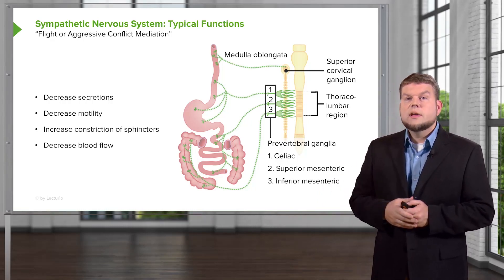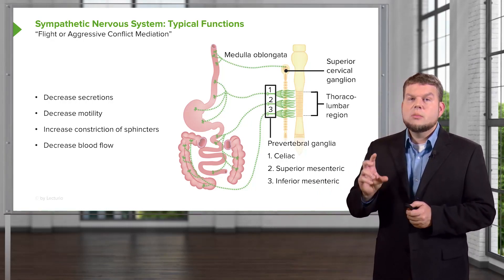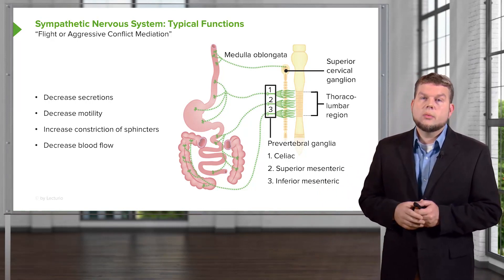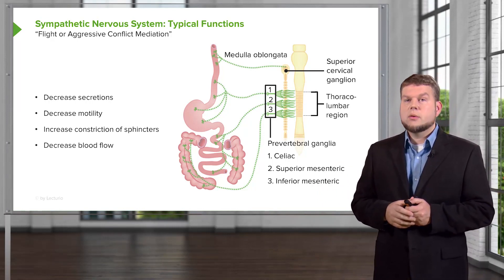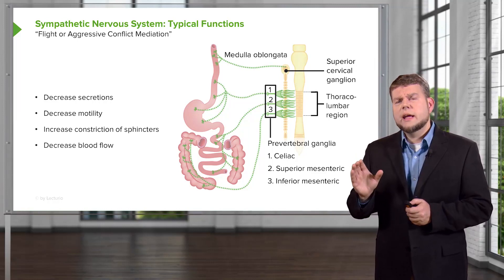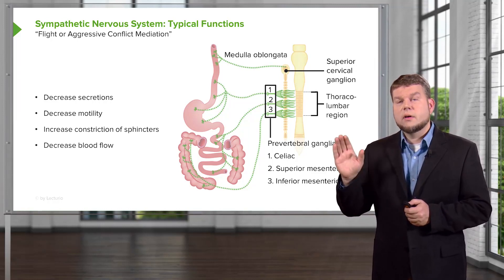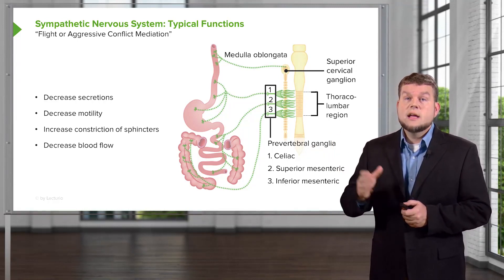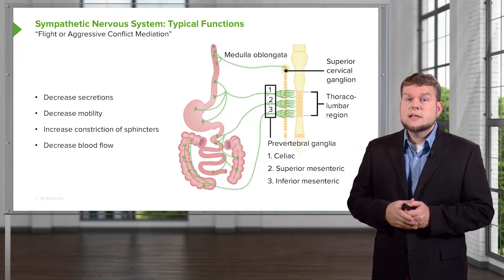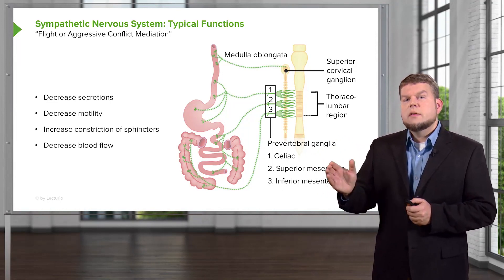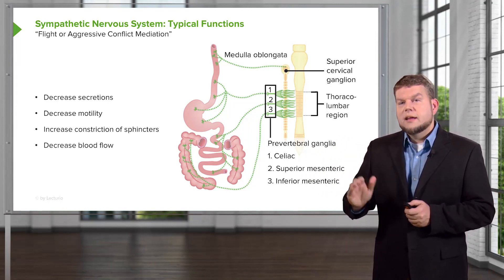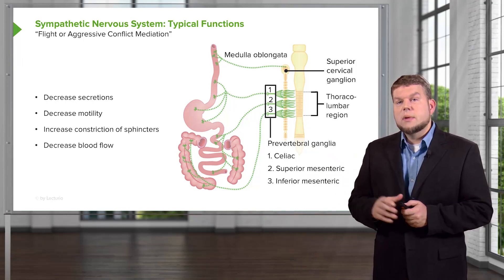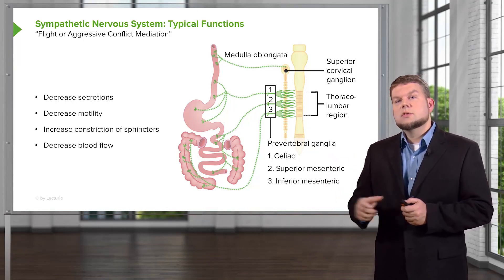Where do the nerves come off here? These almost all come off either the thoracic or the lumbar region of the spinal cord. And these will engage everything from the salivary glands, the upper part of the esophagus, and then there are a number of ganglia located in the GI system that will synapse the signal.